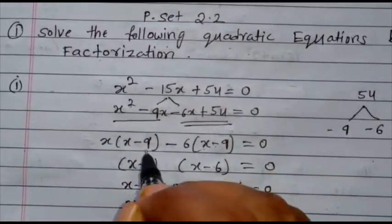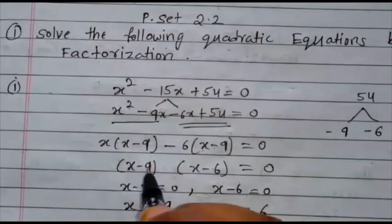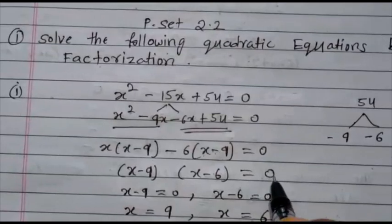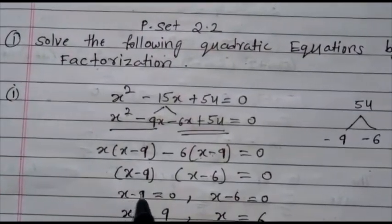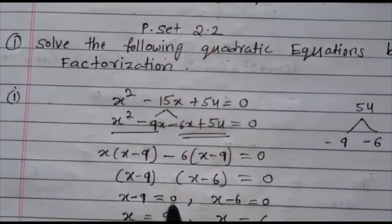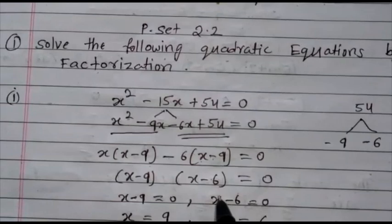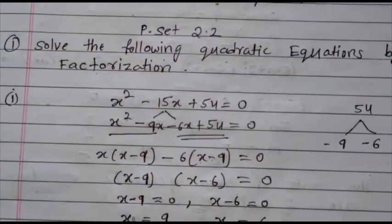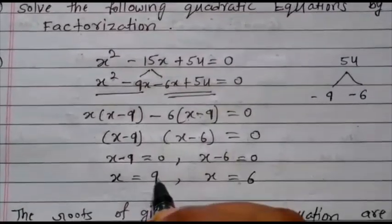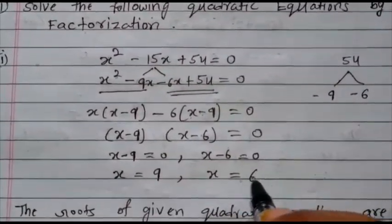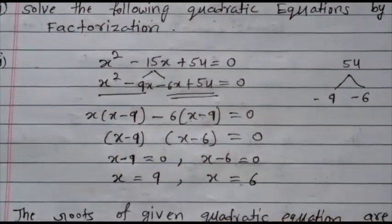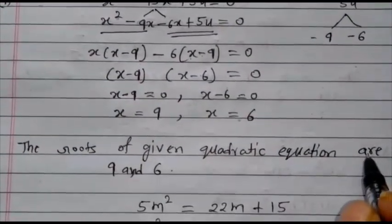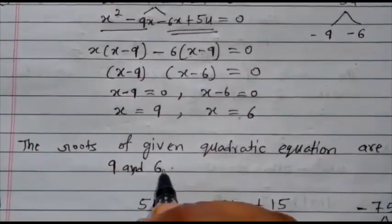Next part: x minus 9 is common. What is left? x minus 6. So: x minus 9 equals 0, and x minus 6 equals 0. Taking terms to the right-hand side: x equals 9, and x equals 6. The roots of the given quadratic equation are 9 and 6.